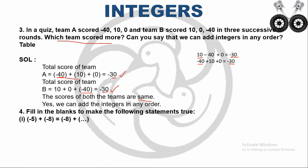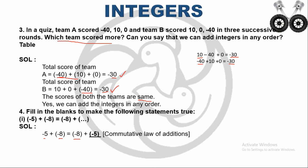The fourth question: fill in the blanks to make the following statements true. The first statement: minus 5 plus minus 8 equals minus 8 plus dash. Here, -5 is the first integer and -8 is the second on the left side, but on the right side -8 comes first. So the blank is -5. The property used here is the commutative property, since we are interchanging the integers.